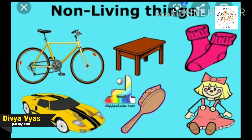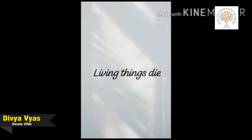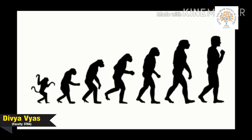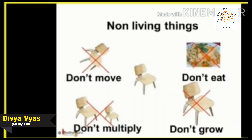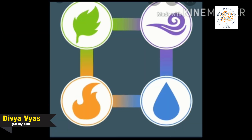Non-living things do not reproduce. Our next point is: living things die. Living things do not live forever; they live for different periods of time — from a few weeks to around 5,000 years. However, all animals and plants die after some time. Non-living things do not move, eat, grow, or reproduce, and they do not die because they do not have life. A chair, a table, or a stone doesn't die.